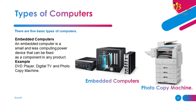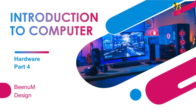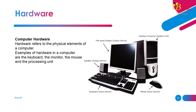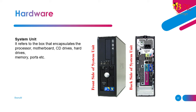Part 4: Hardware. Computer hardware refers to the physical elements of a computer. Examples include the keyboard, the monitor, the mouse, and the processing unit. The system unit refers to the box that encapsulates the processor, motherboard, CD drives, hard drives, memory, ports, etc.